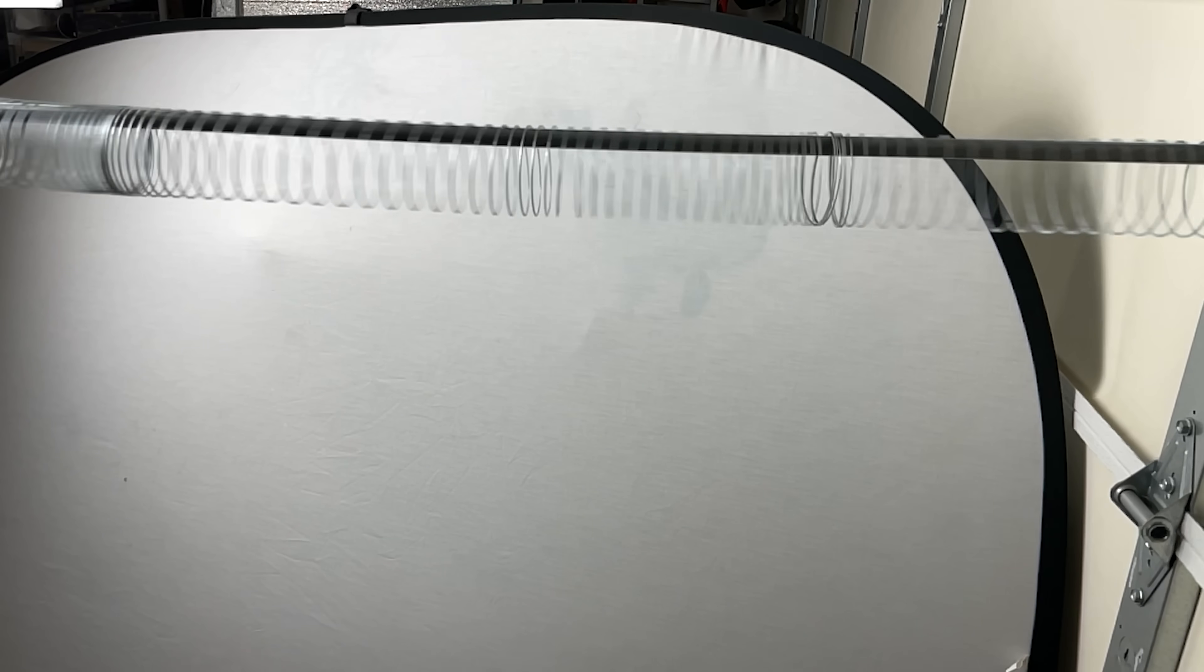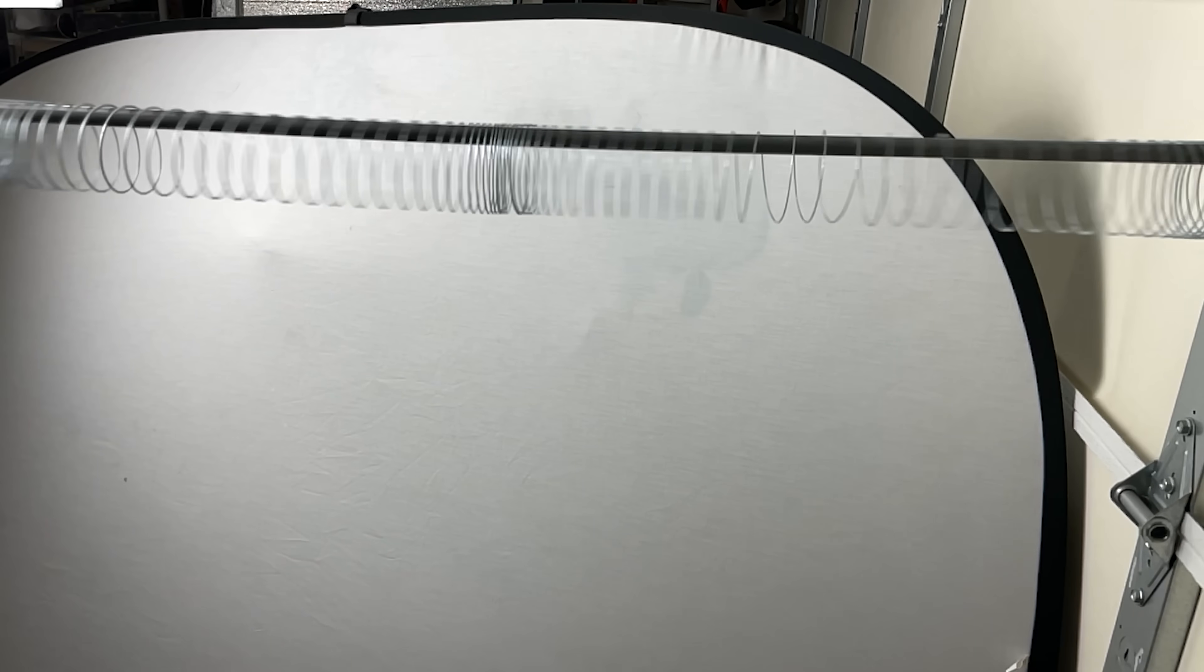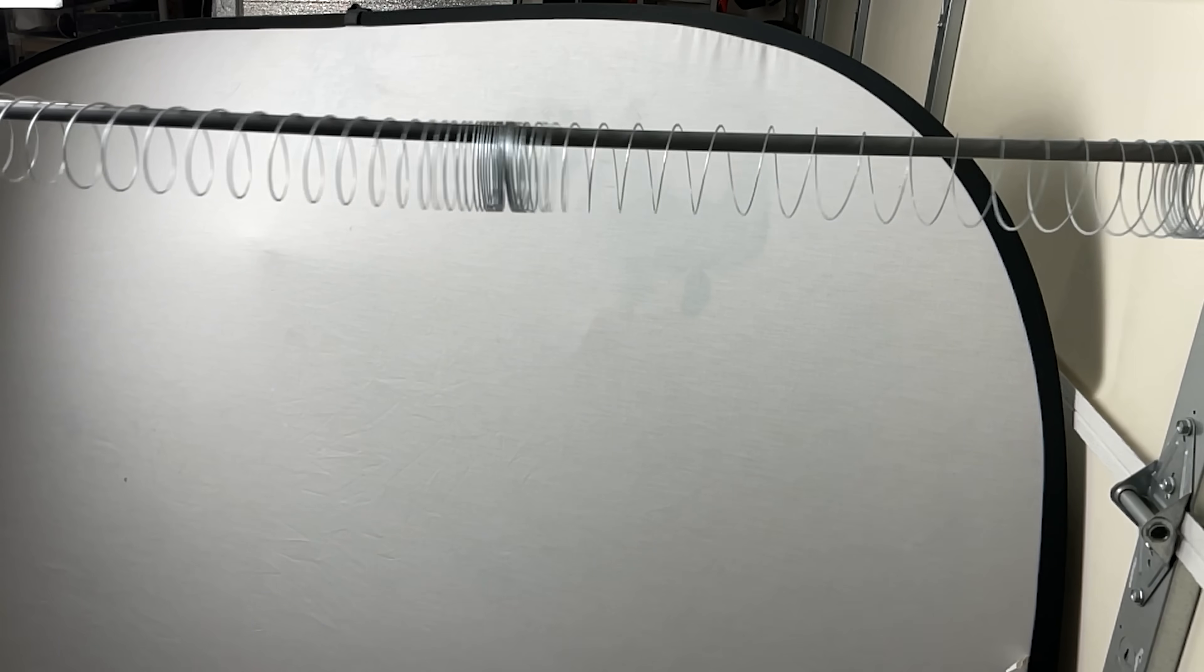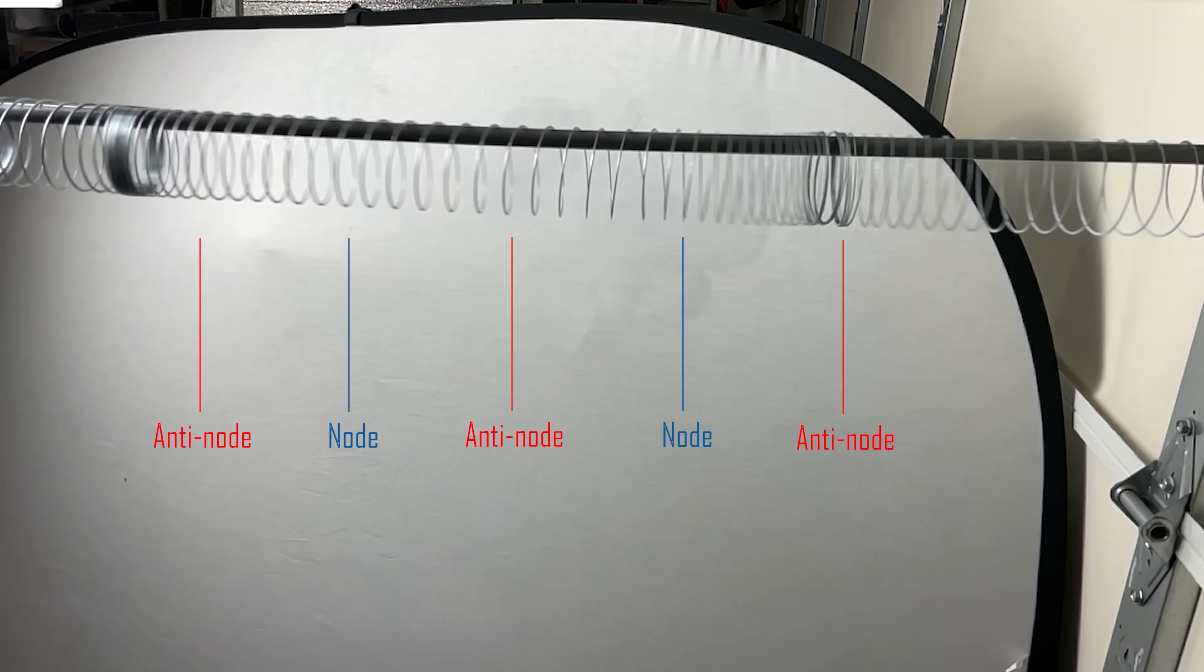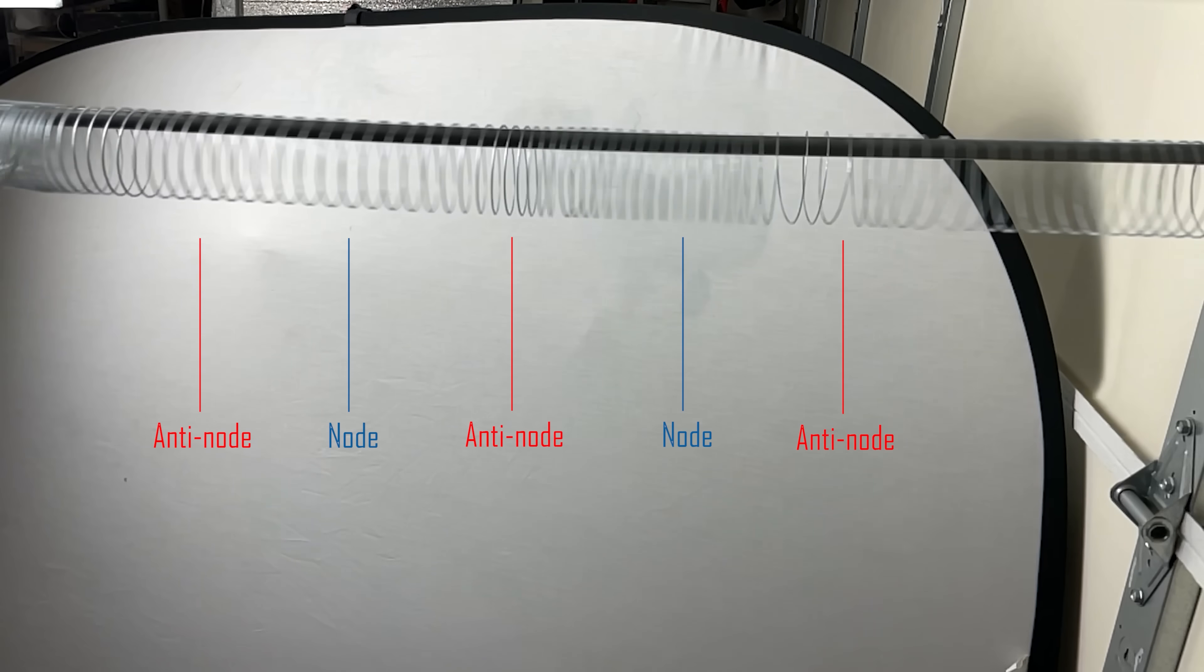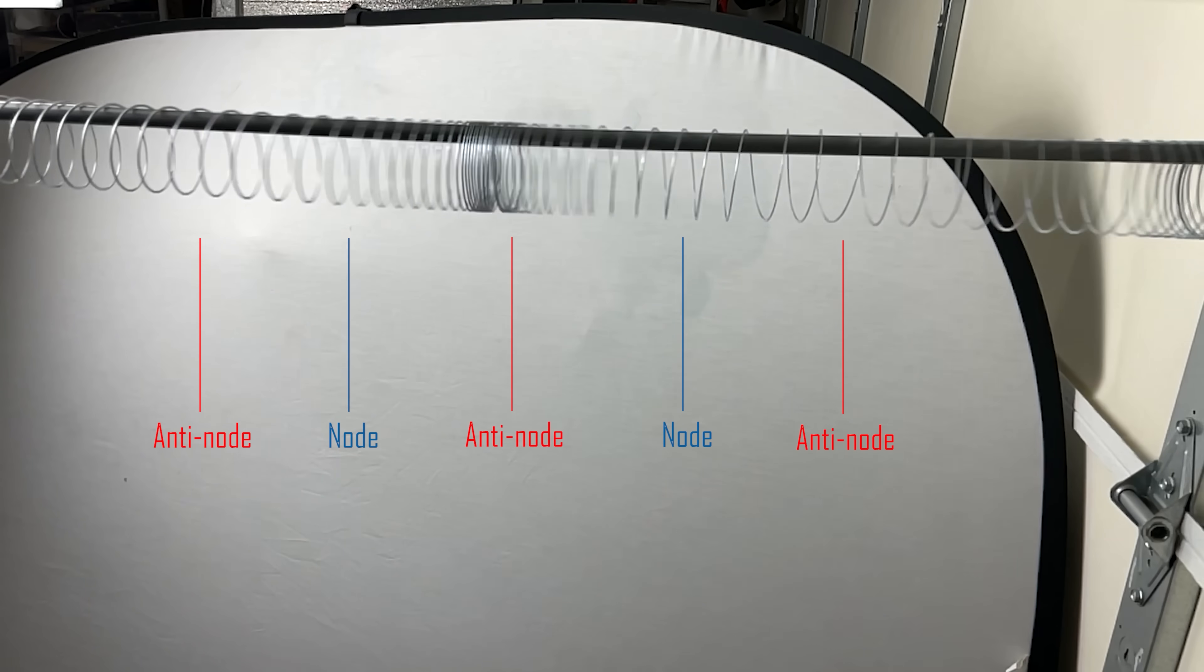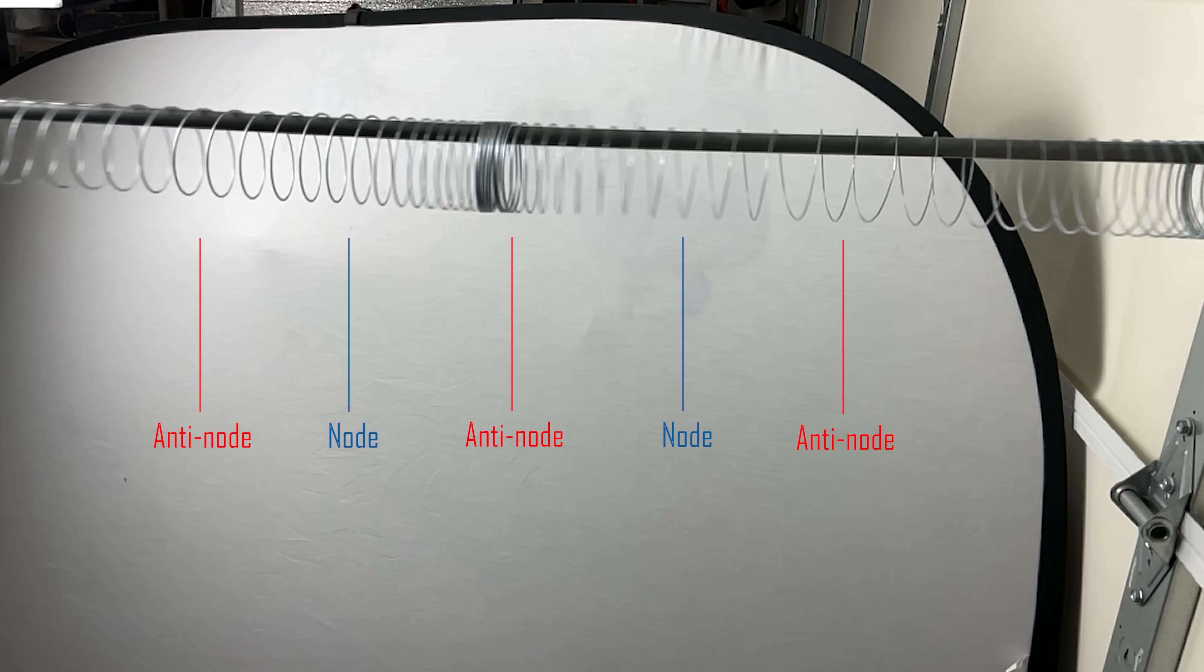I'll have regions where there's a lot of movement of the slinky and relatively no movement of the slinky. The places where there's no net movement of particles but high pressure fluctuations are called the antinodes, and the places where there's high movement of particles but no pressure fluctuations are called the nodes.